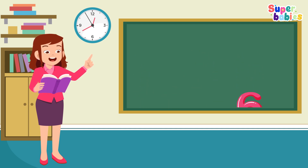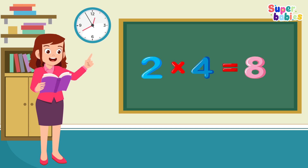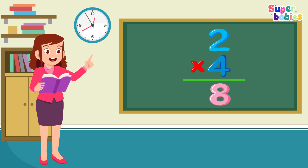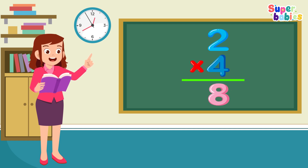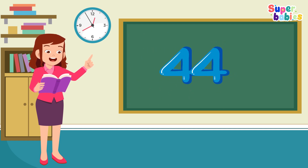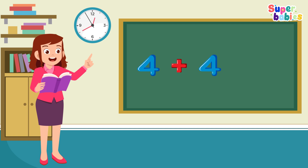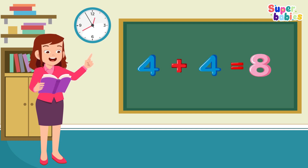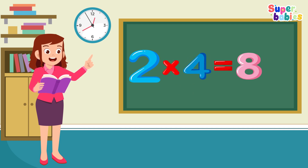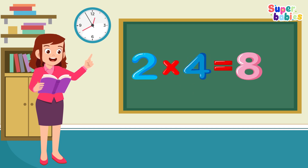Two times four equals eight. Two, four equals eight. One, two, four equals eight. Two times four equals eight.